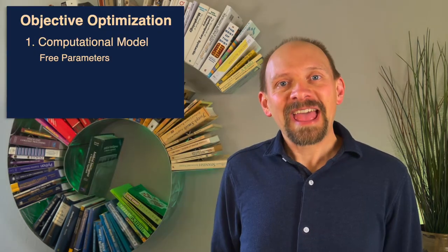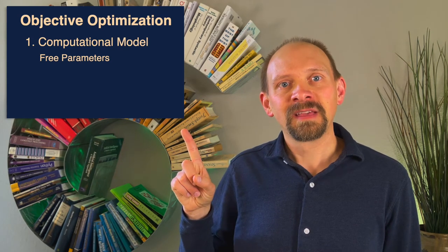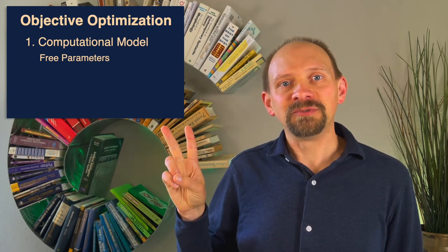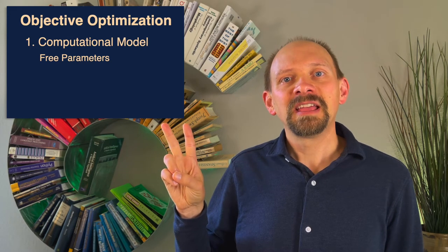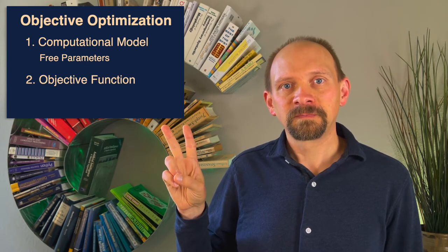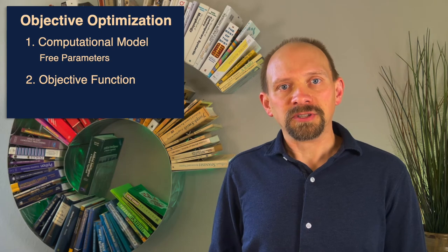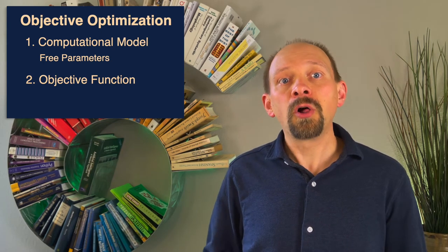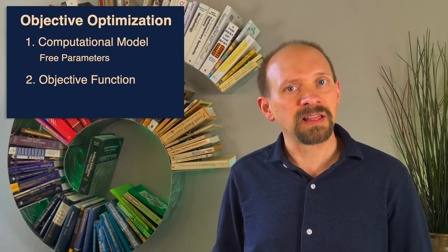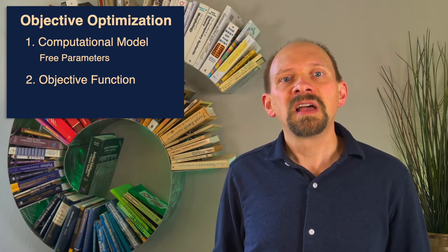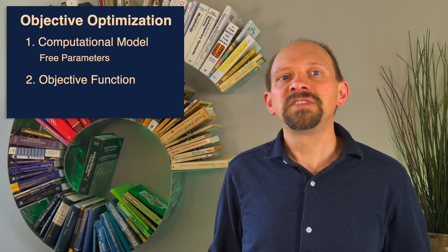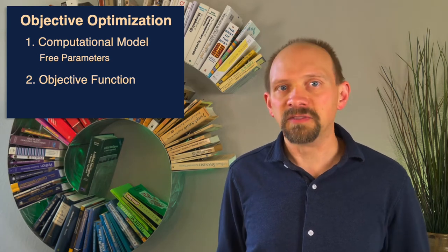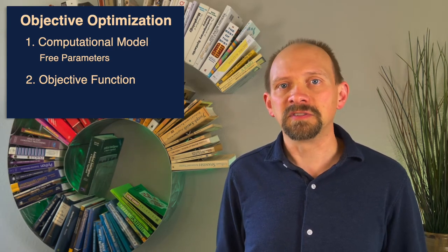Once we have a computational model for our problem, the second component of the objective optimization framework is an objective function. An objective function consumes an instance of the computational model with all free parameters nailed down to specific values and outputs a single number that represents the goodness or accuracy of the model at the current settings of its free parameters.